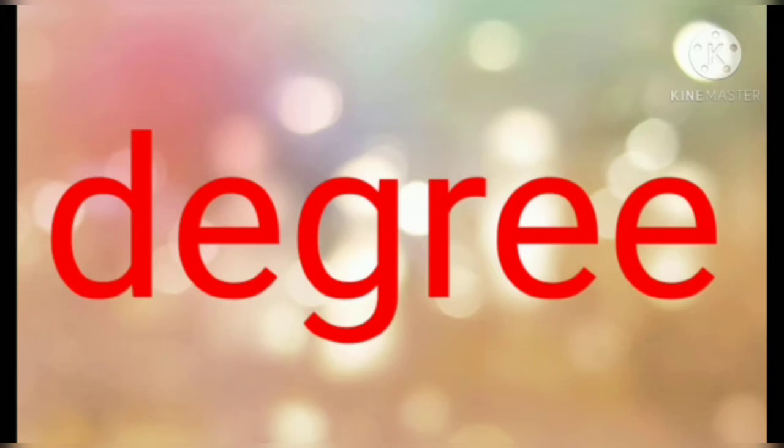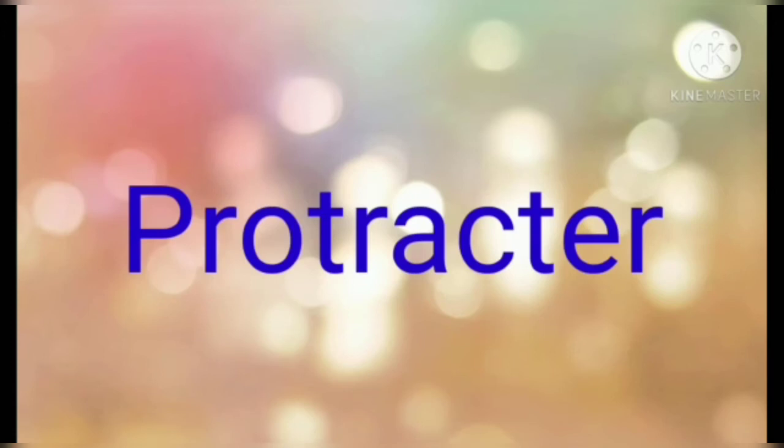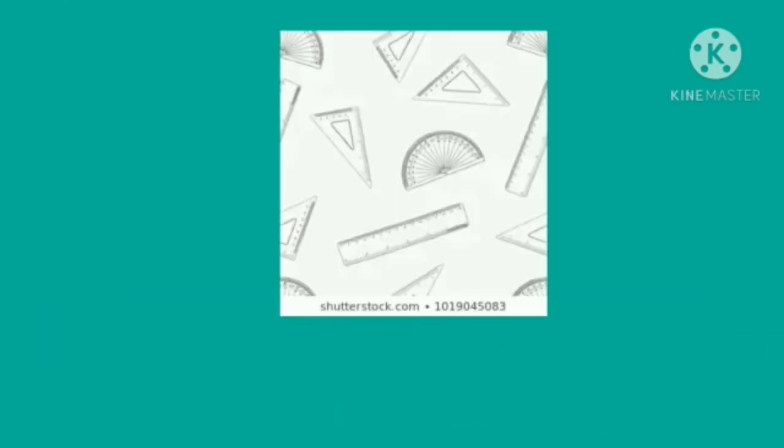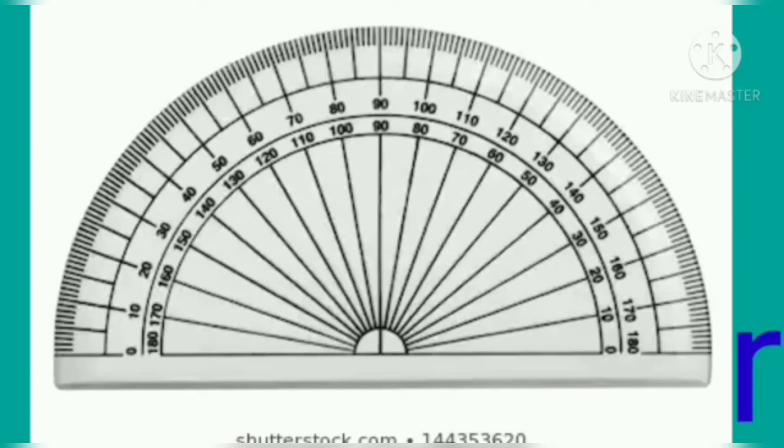And protractor - in your geometry instrument box there is one instrument, that is protractor. Protractor is the instrument to measure the angle. Have you seen protractor children? In this protractor 0 degree to 180 degree is marked from left to right and also 0 degree to 180 degree from right to left side.